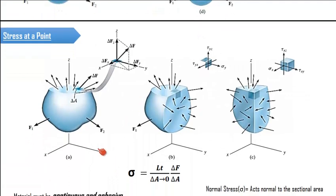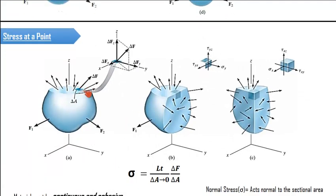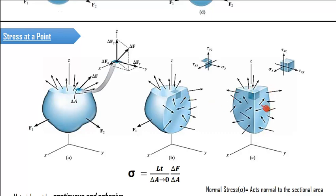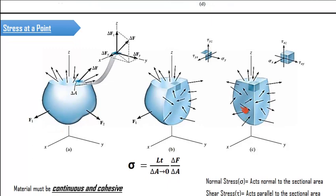Now let us discuss about the stress at a point. If we take the same cross section and consider a very small area delta A, the force is also very small. We can resolve this small force into three components: y, x, and z. If we take another section perpendicular to the initial section, another set of forces develops. These two sets of forces are completely different because the surfaces considered are two distinct quantities. Taking a third plane mutually perpendicular to the other two gives a three-dimensional effect, and the resistive forces on these three surfaces are completely different.